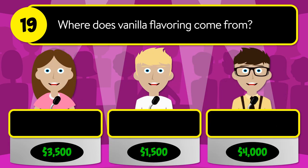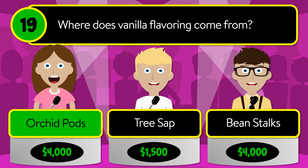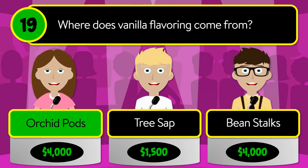Question number nineteen: where does vanilla flavoring come from? Is it orchid pods, tree sap, or bean stalks? The correct answer is orchid pods.